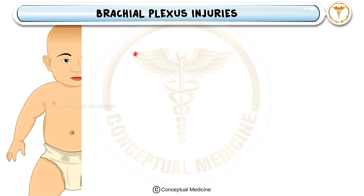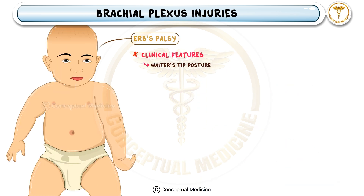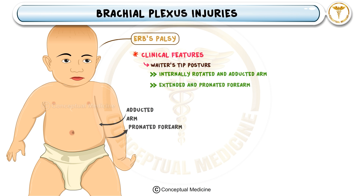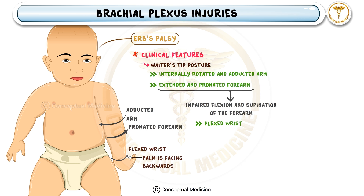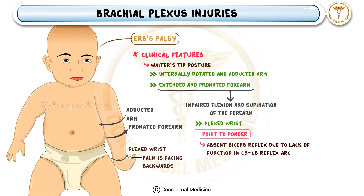This results in a characteristic clinical presentation known as the waiter's tip posture. The arm is adducted and internally rotated because the deltoid and supraspinatus are weak, leading to an inability to abduct the arm. The forearm is extended and pronated since the biceps brachii, brachialis, and brachioradialis are affected, impairing elbow flexion and forearm supination. The wrist is flexed because the wrist flexors remain unopposed. Patients also show weakness in external rotation due to impaired function of the infraspinatus and supraspinatus muscles. Additionally, the biceps reflex is absent, as the C5 to C6 reflex arc is damaged.